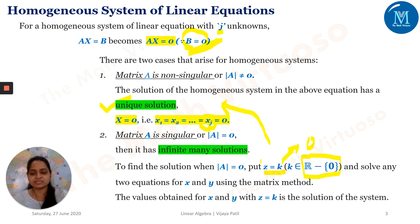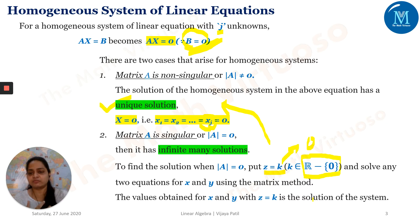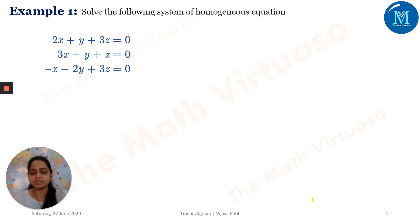I will just go ahead with an example. For X, you will get some value; for Y, some value; and for Z equals K we have assumed — and this is what is the solution of the equations. Let's see this with one example.